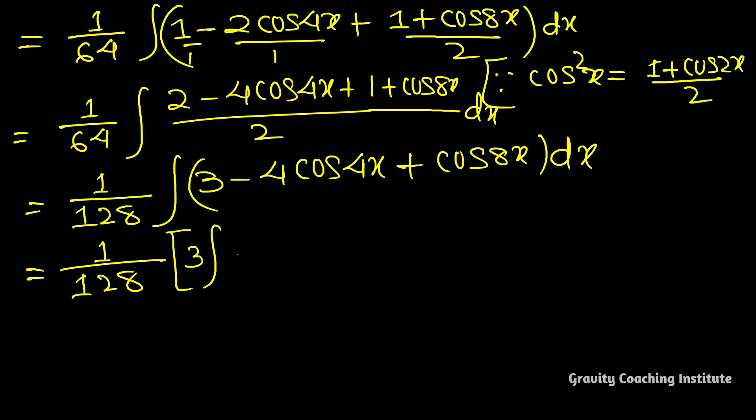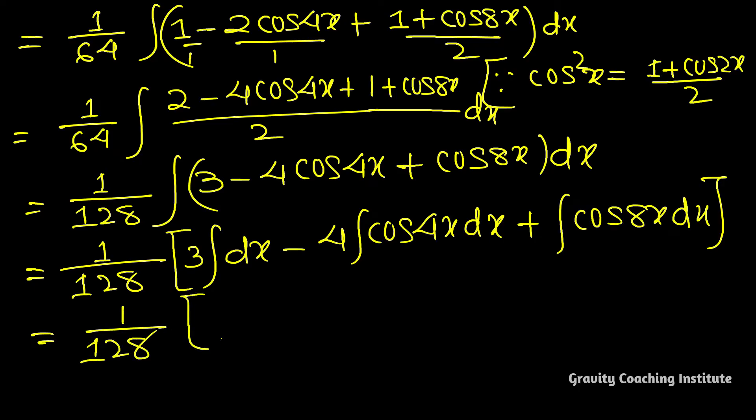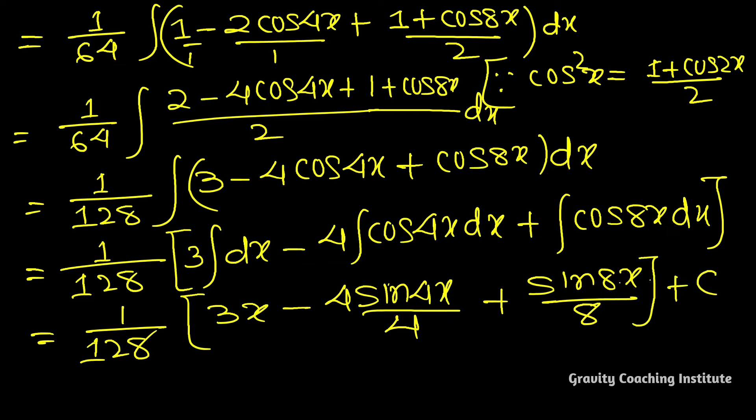Equals 1 by 128, 3 into integration dx minus 4 into integration cos 4x dx plus integration cos 8x dx equals 1 by 128. Integration of cos 4x is sin 4x by 4, cos 8x becomes sin 8x by 8 plus c.